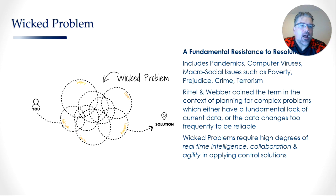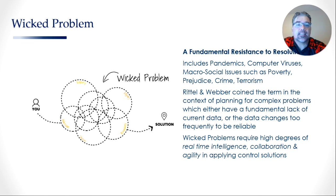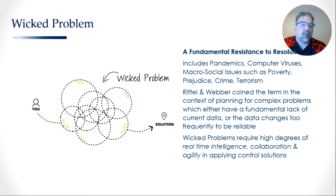The fourth concept is wicked problems, which has been around since the 70s. Essentially, a wicked problem has a fundamental resistance to resolution. This includes pandemics, computer viruses, and social macro issues such as poverty, prejudice, crime, and terrorism. In all those cases, numerous controls and solutions have been presented, but all that happens is the problem reshapes, reforms, and comes back in a different format requiring a new level of thinking or a new control. We saw this in the pandemic — roughly March 2020, everyone rushed into mass global lockdown to stop the spread of the virus. All that happened was a three-month leeway where the threat died down, and then three months later it came back with much greater force. We saw second and third waves that were significantly more fatal and prolonged — that is classic wicked risk.